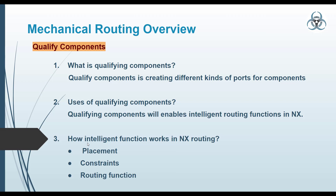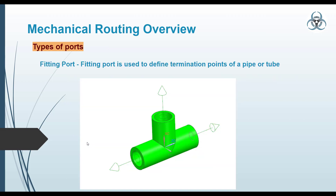Now we'll check what the different types of ports are. When a component has ports, we can easily say the component is completely qualified. As you can see here, there is a connector and it has ports — all three ports are visible here shown by arrows. When we have these kinds of ports we can say the component is completely qualified.